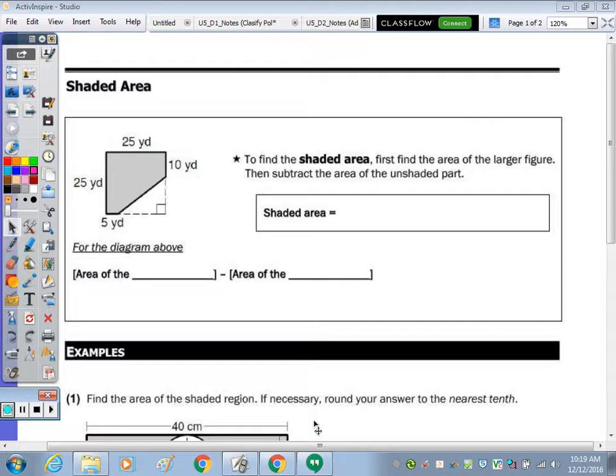Shading area. So in the box at the top, it says to find the shaded area. First, find the area of the larger figure, then subtract the area of the unshaded. So let's just circle subtract.